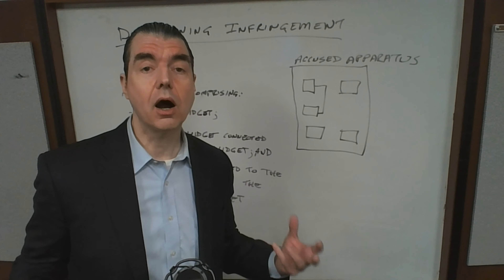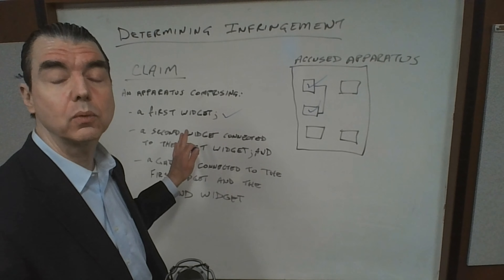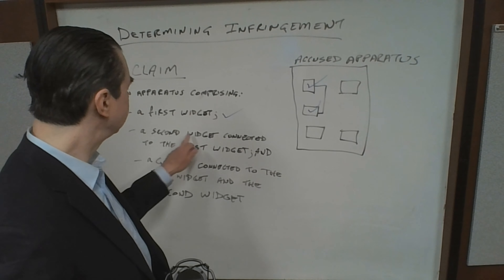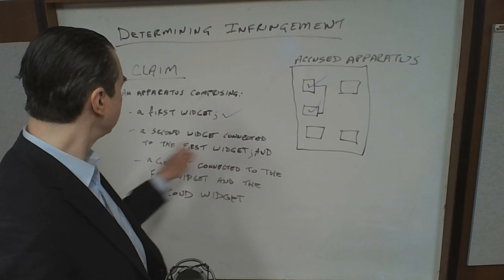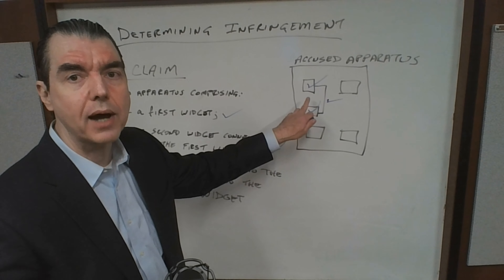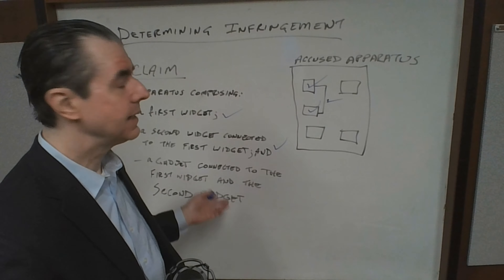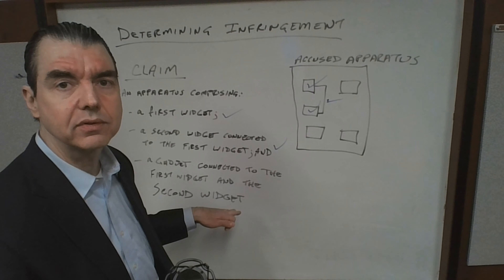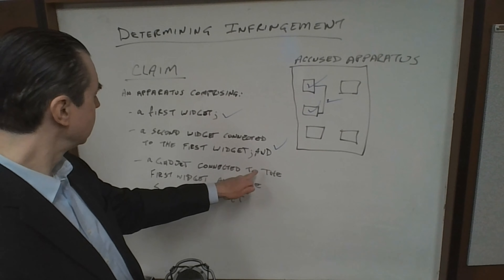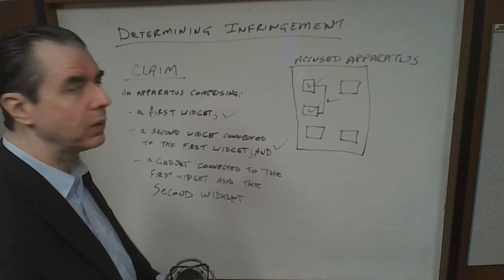We look then for the second widget, and we have the second widget — again, heading in the right direction to show infringement. Notice that the second limitation has more information: it's not just that there's a first and second widget present. The second widget also has to be connected to the first widget. In this example, it is, so we now have both the first and second limitations present in the accused apparatus.